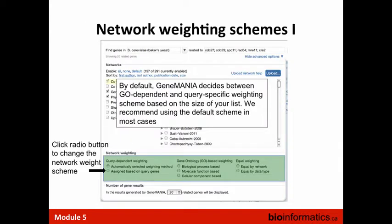In GeneMANIA we automatically select which weighting scheme to use. If your gene list is short — say one gene — we don't know what question you're asking, so by default we use fixed weights based on how good that network is at reproducing known function. If you give a longer list we use the query-dependent scheme. We also allow you to equally weight each data source if you don't trust our weighting algorithms.